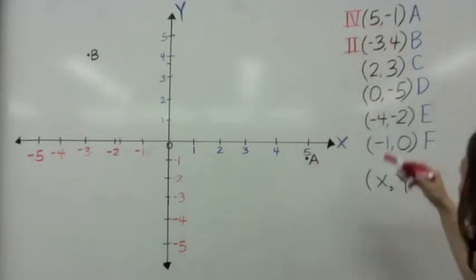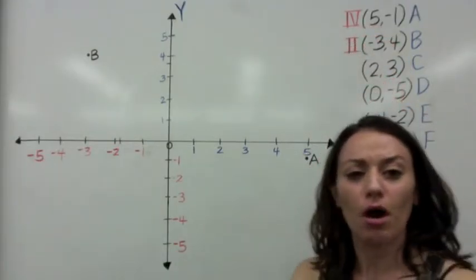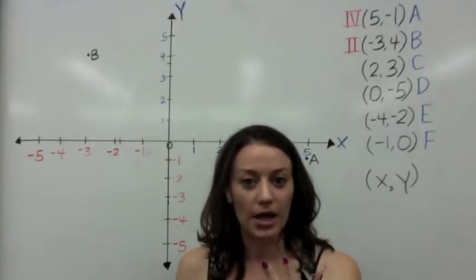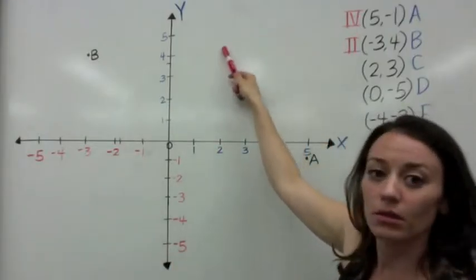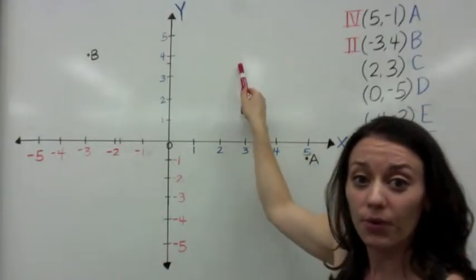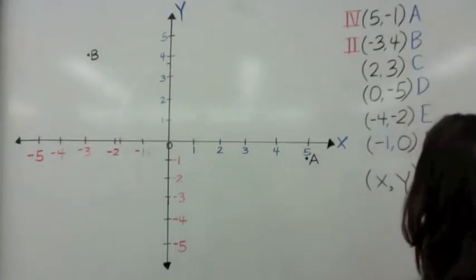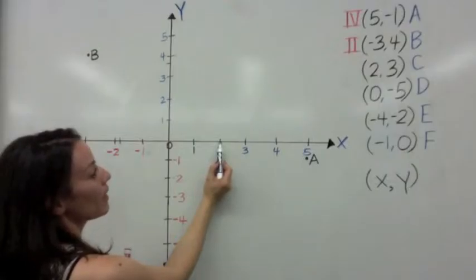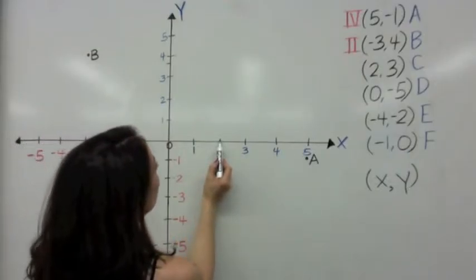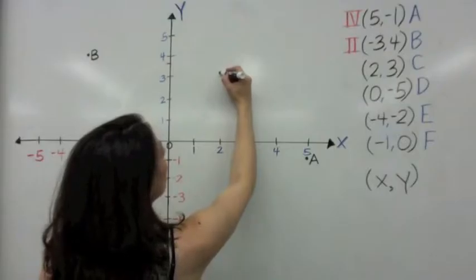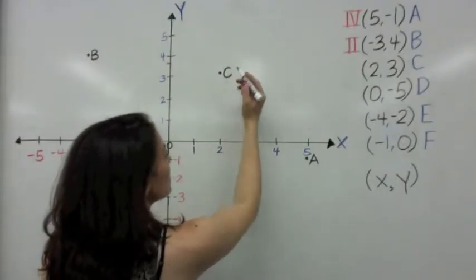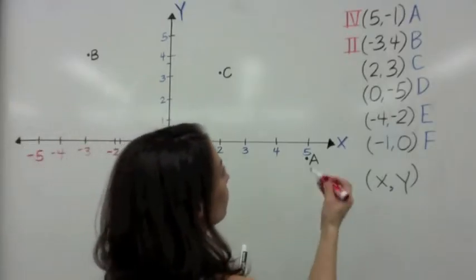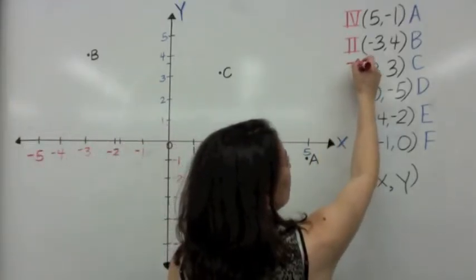Next is (2, 3). You should already know that if x is positive and y is positive, this is going to be in quadrant 1. We're going to start at where x is 2, and then go up 3. We're going to call that point C. It's in quadrant 1.